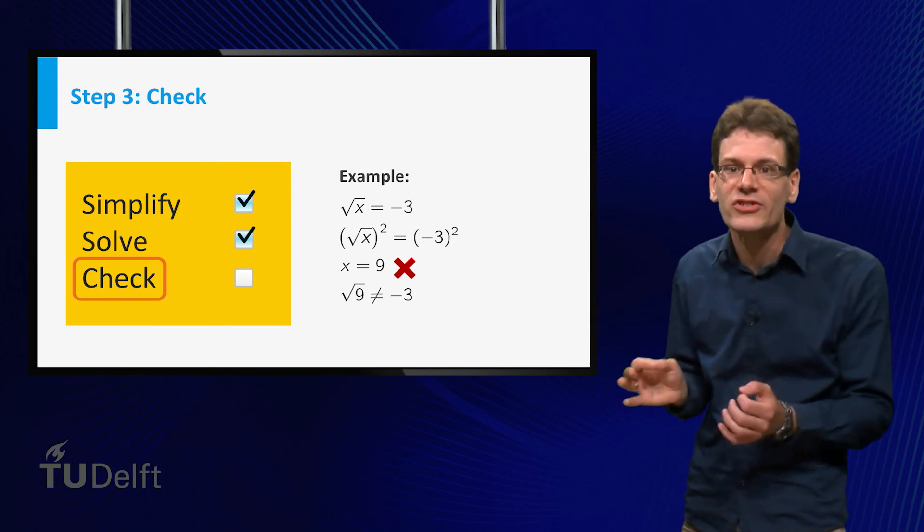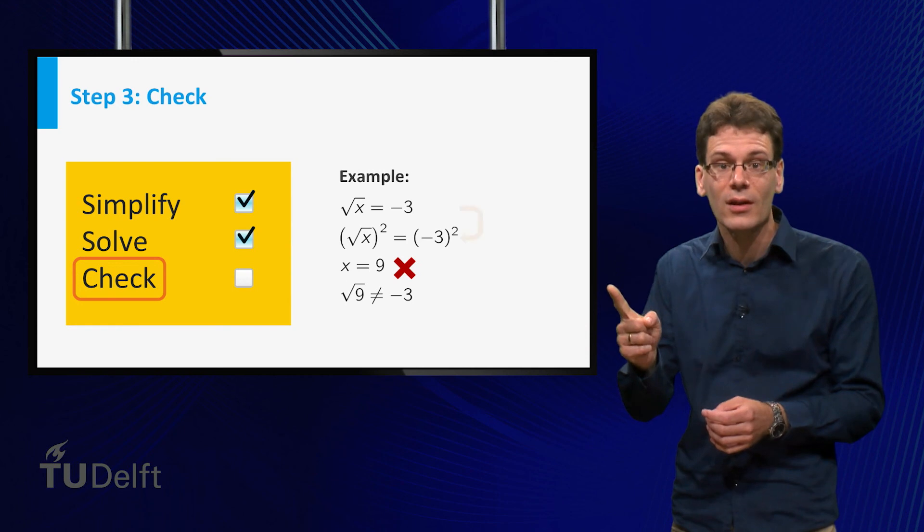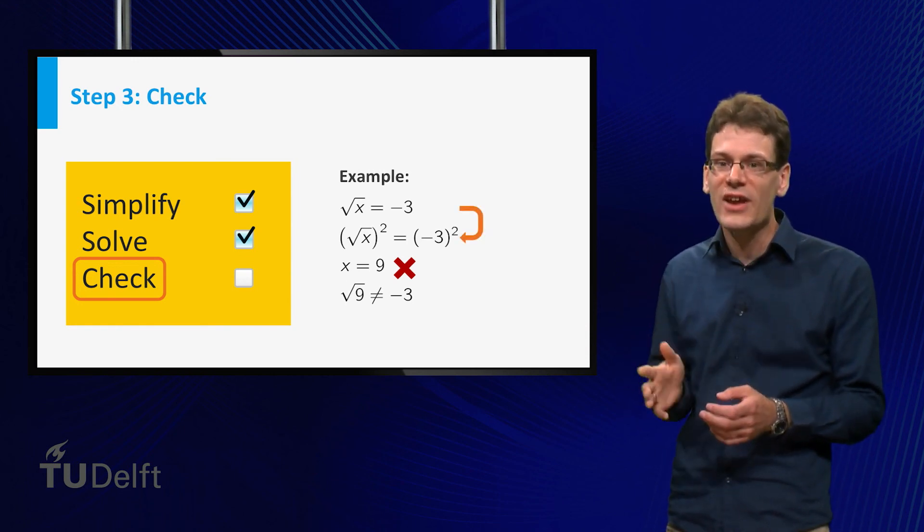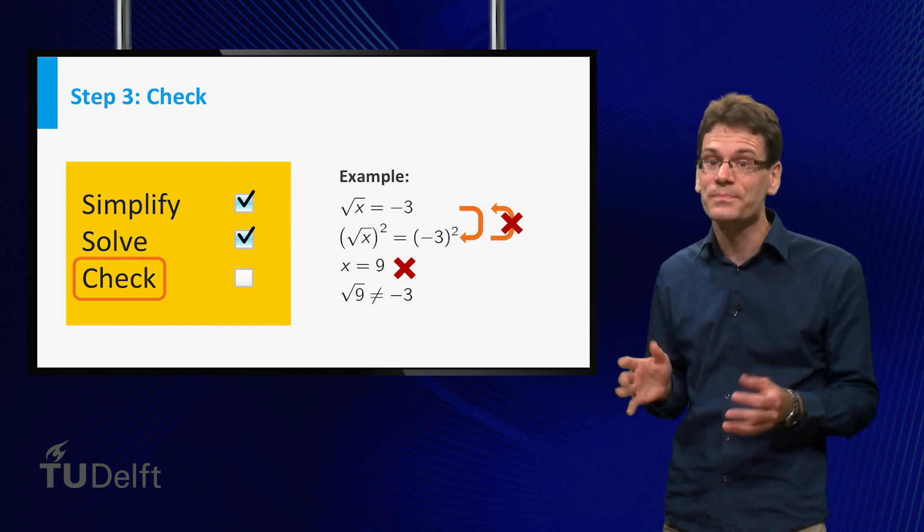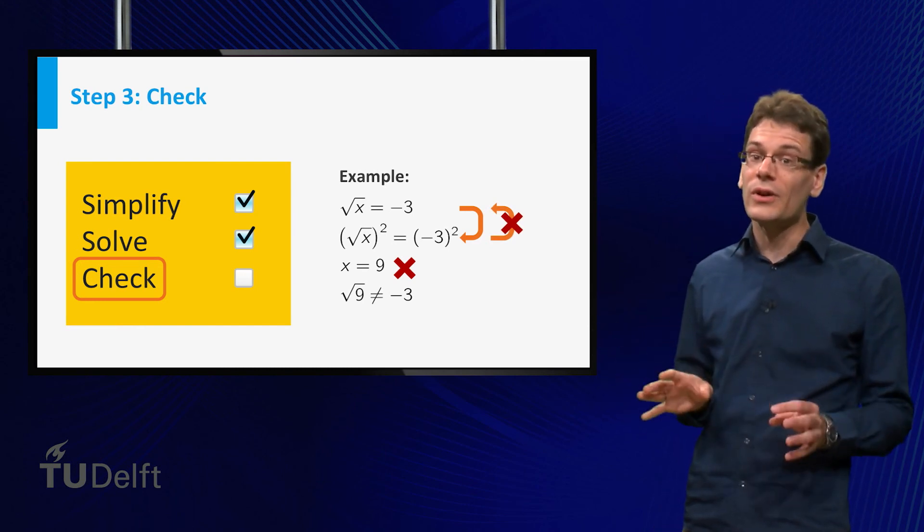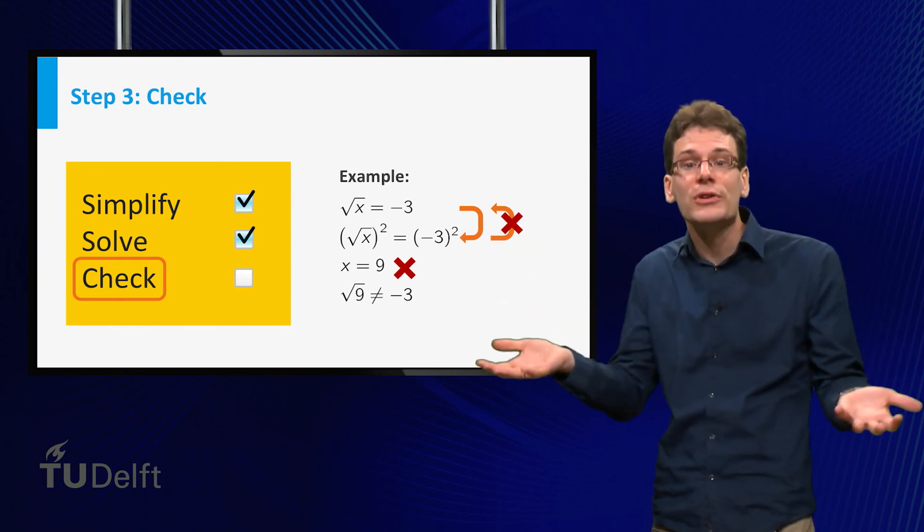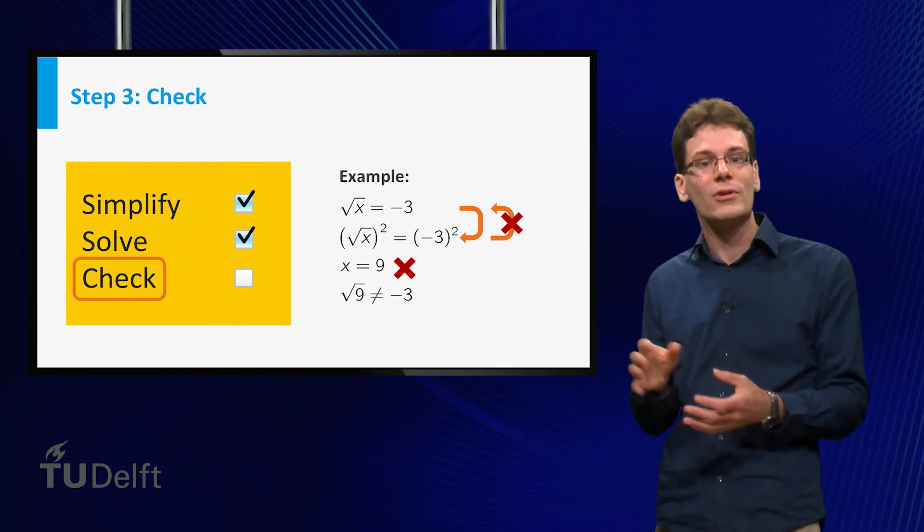Well, our derivation tells us that if x is a solution to the first equation, then it is also a solution to the second. But in general, the reverse does not have to be true, and in this case it isn't. This is not a problem as long as you are aware that the new equations in your derivation may have more solutions than the first one, and you can easily identify the false solutions by simply checking.